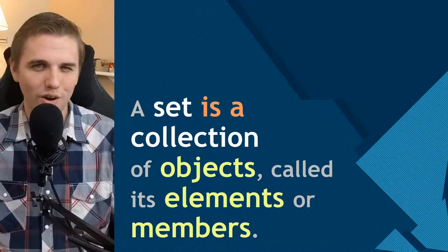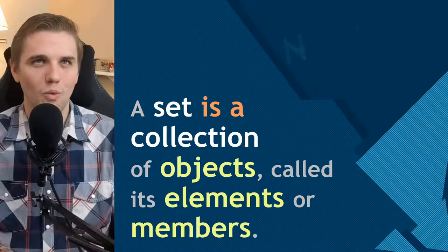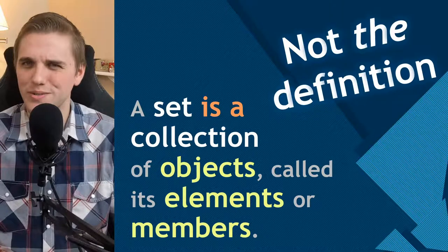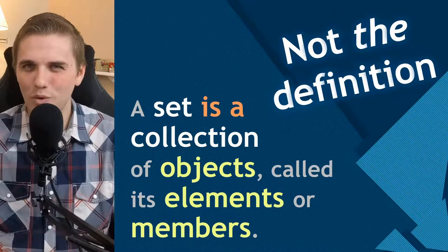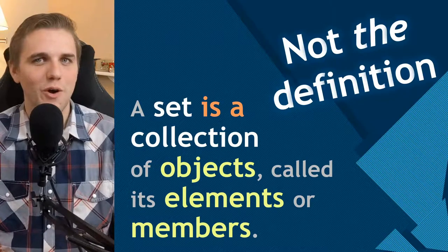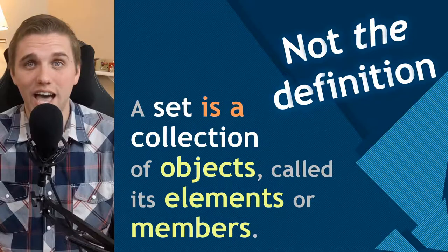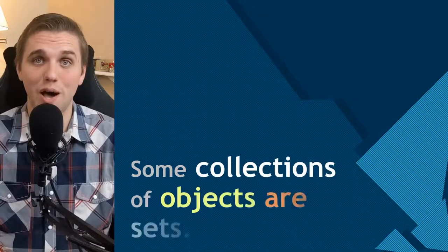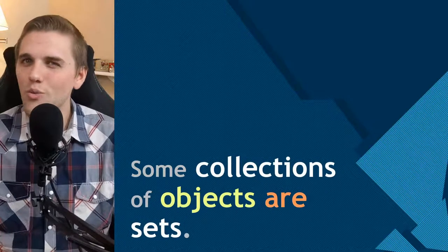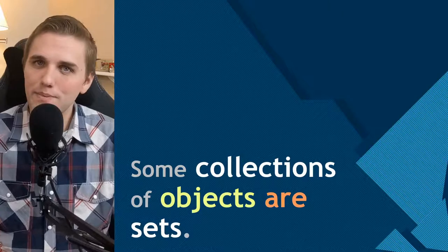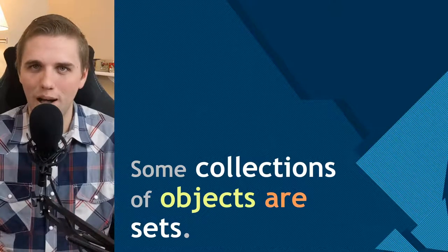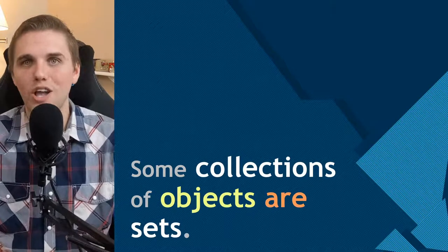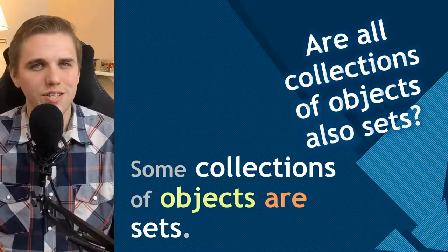Now this is where things get really weird and strange. Why is this not the definition of a set? You and I both know what a collection of objects is, right? Why can't we just call this the definition of a set? Well, if the statement is a description of a set and not a definition, then that just means that some collections of objects are sets. Are all collections of objects also sets?